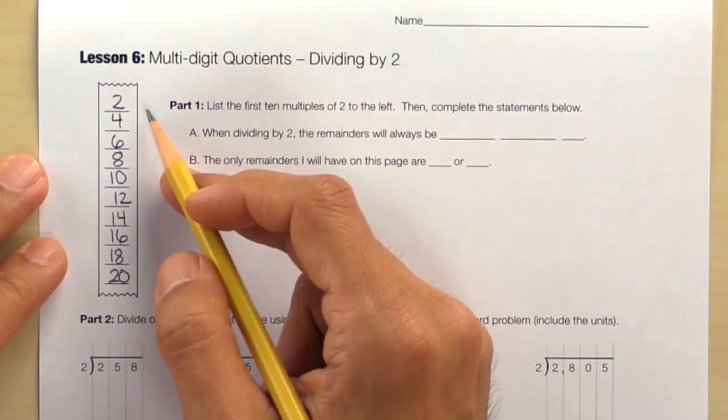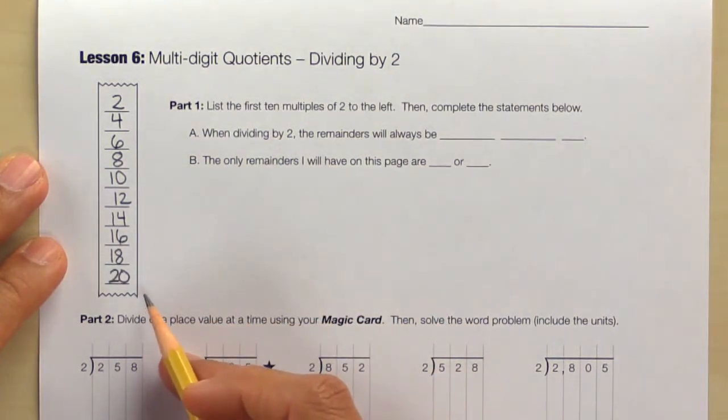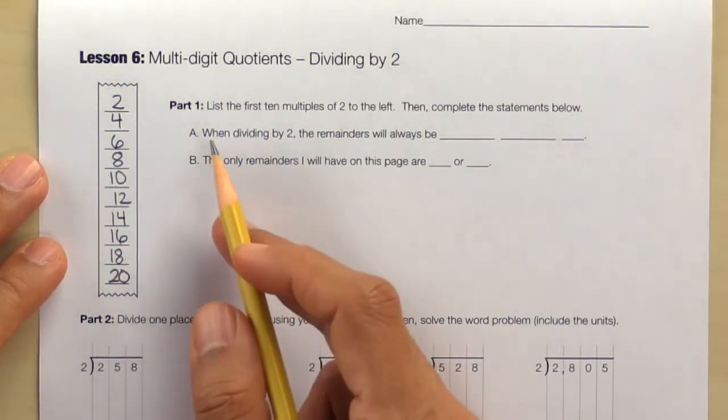Lesson 6, Multi-Digit Quotients Dividing by 2. Take a look at part 1. First, students should list the first 10 multiples of 2 just like this. Then they complete statements A and B.